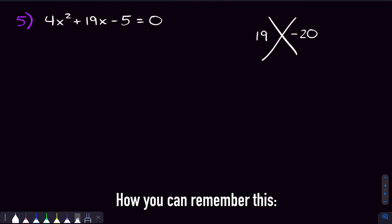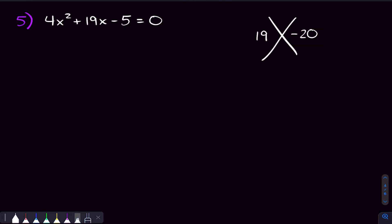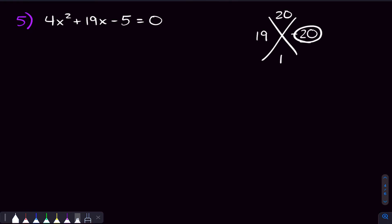We want two numbers that add to be 19 and multiply to be negative 20. Using the same 1-apart trick: 19 and 20 are 1 apart, so our numbers will be 20 and 1. Since we need a negative product, we put the negative on the 1. Then 20 plus negative 1 equals 19, and 20 times negative 1 equals negative 20. We split the middle term 19x into 20x minus x, so we get 4x squared plus 20x minus x minus 5.